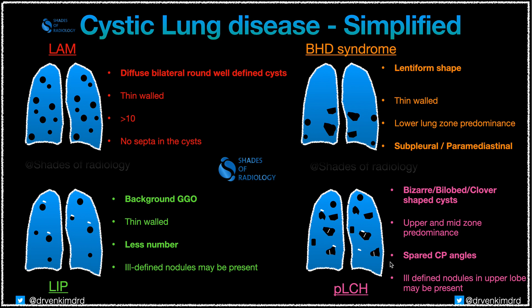Coming to pulmonary Langerhans cell histiocytosis (LCH), we see many cysts which are usually bizarre in shape — sometimes bilobed, flower-leaf shaped, or various other descriptions based on their appearance. These usually have upper and mid zone predominance, and another important feature is the sparing of the costophrenic angles, which are characteristically spared in pulmonary LCH. Sometimes ill-defined nodules may also be seen in the upper lobes.